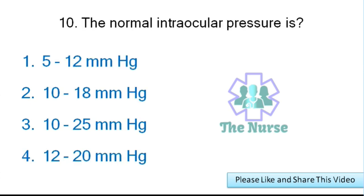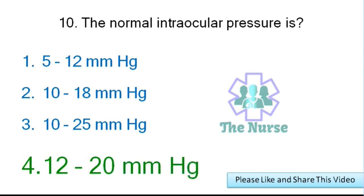Next question: What is the normal intraocular pressure? Options: 5 to 12 mmHg, 10 to 18 mmHg, 10 to 25 mmHg, or 12 to 20 mmHg. Correct answer: 10 to 20 mm of mercury.